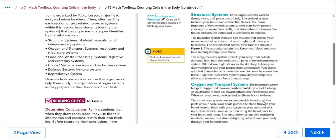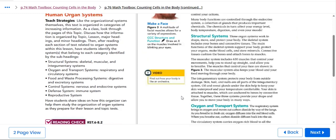The respiratory system brings in oxygen and moves out carbon dioxide by way of the lungs, and the circulatory system carries oxygen-rich blood to all parts of your body.